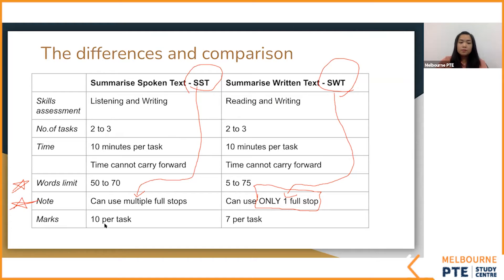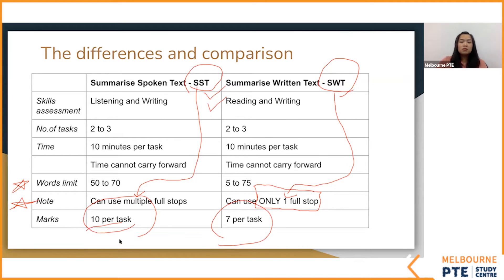SST gives you 10 marks for one question, and SWT gives you 7 marks for one question. So which one is more important to your writing? SST — this one. The more marks it gives you for one question, the more it contributes to your writing score.